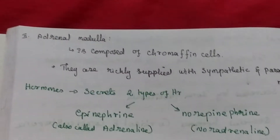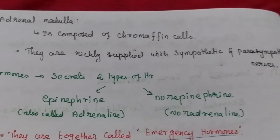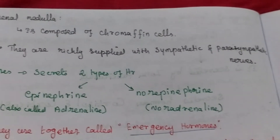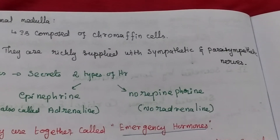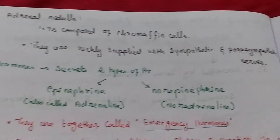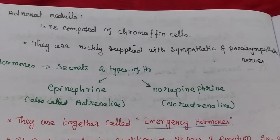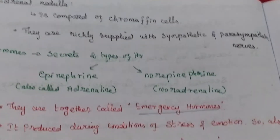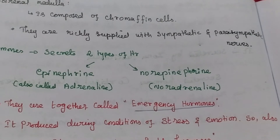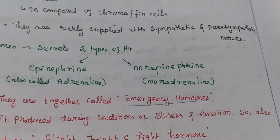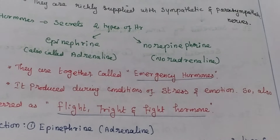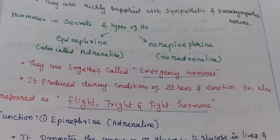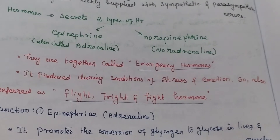The second part is the adrenal medulla. It is composed of chromaffin cells, richly supplied with sympathetic and parasympathetic nerves. It secretes two different types of hormones: epinephrine and norepinephrine. Both hormones together are called emergency hormones, produced during conditions of stress and emotion. They are also referred to as the flight, fright, and fight hormones.